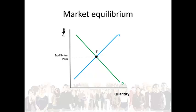When the price is below the equilibrium price, meaning somewhere like P2, the quantity demanded will be much larger than the quantity supplied, meaning in this market there will be a market shortage. The market will be in disequilibrium.